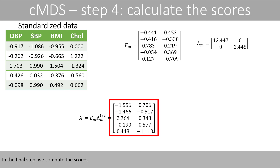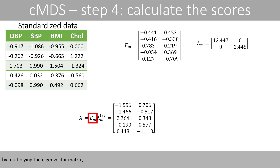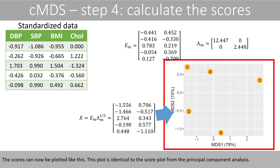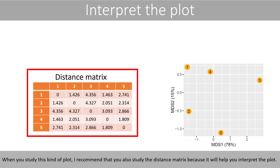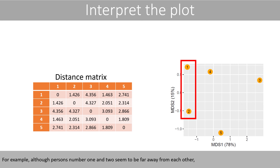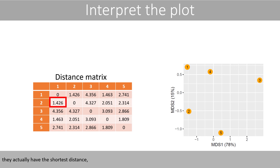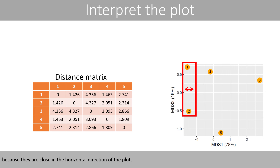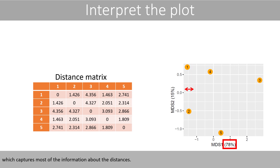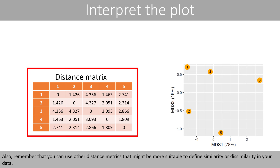In the final step, we compute the scores by multiplying the eigenvector matrix with the square root of the eigenvalue matrix. The scores can now be plotted, and this plot is identical to the score plot from the principal component analysis. When you study this kind of plot, I recommend that you also study the distance matrix, because it will help you interpret the plot. For example, although persons number one and two seem to be far away from each other, they actually have the shortest distance because they are close in the horizontal direction of the plot, which captures most of the information about the distances.